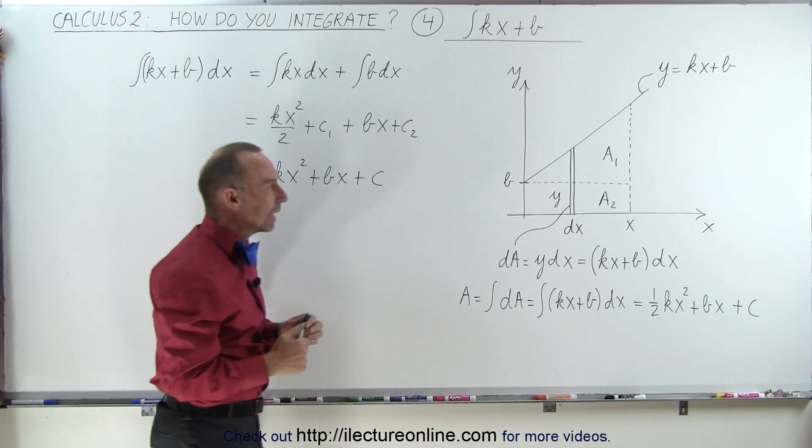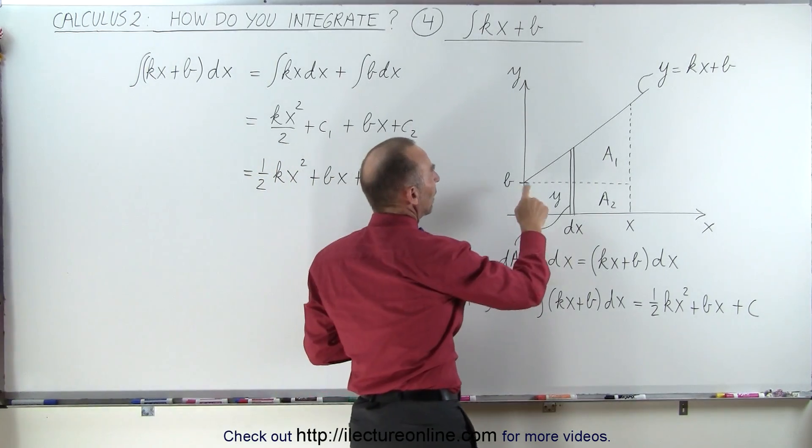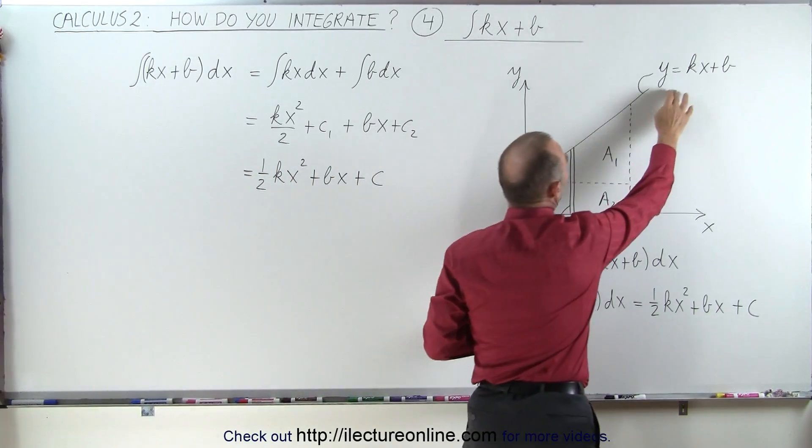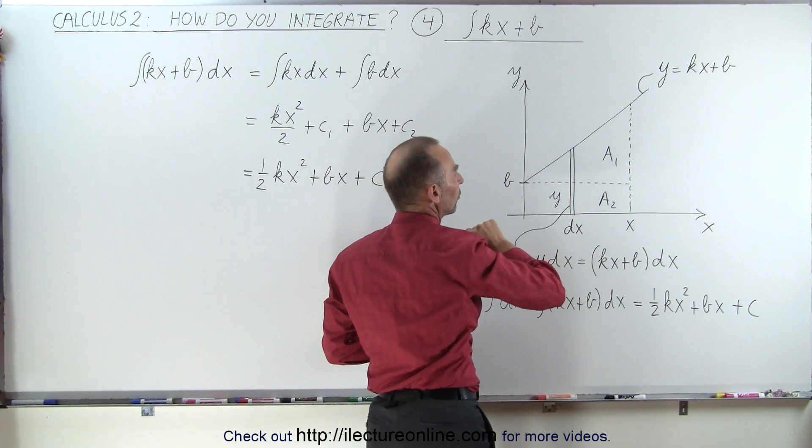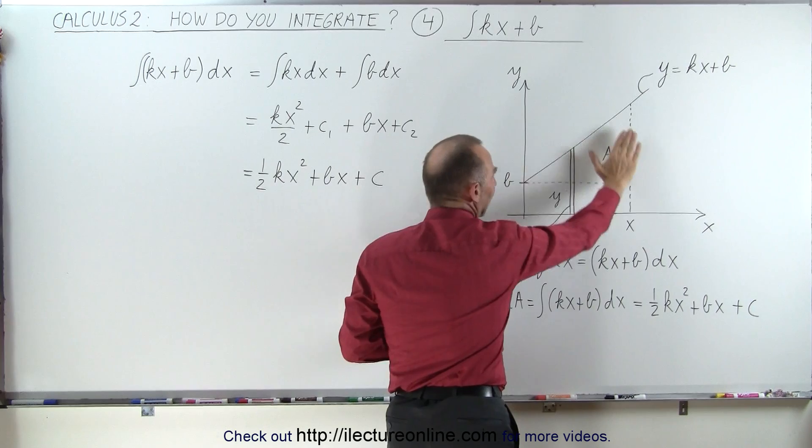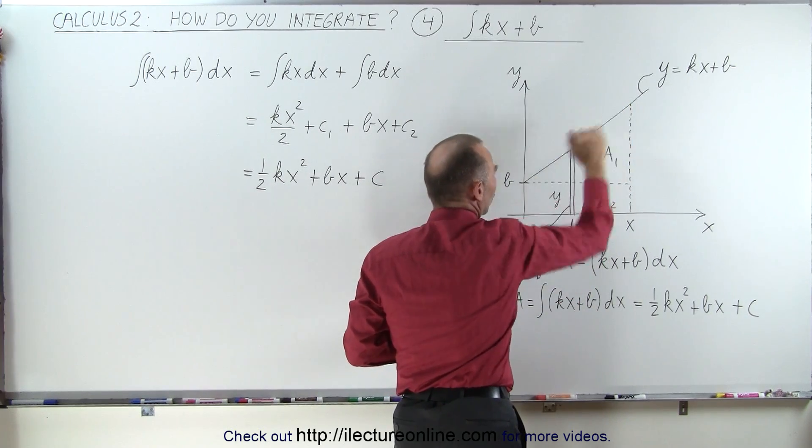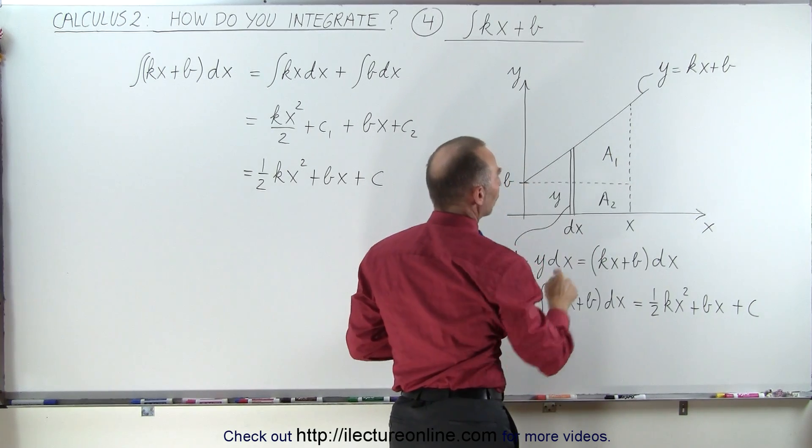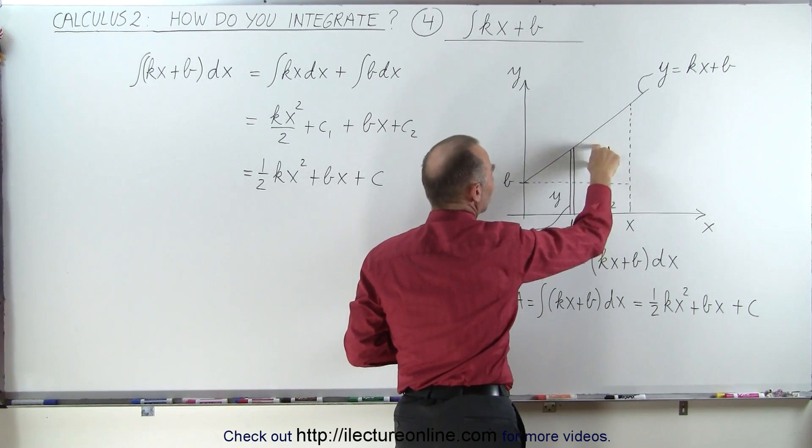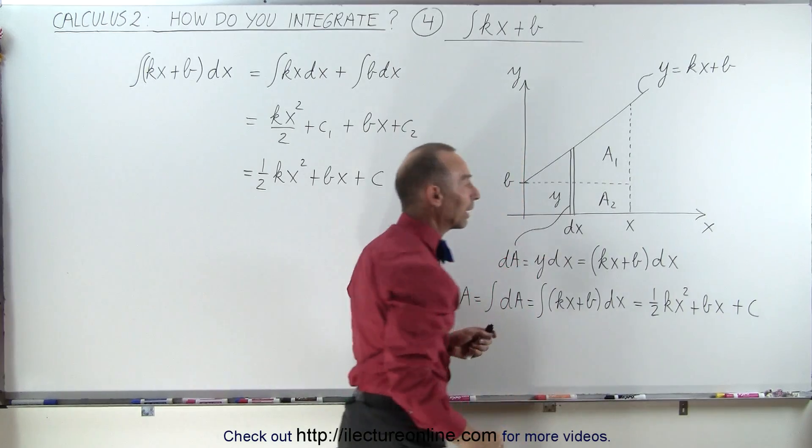Now let's take a look at it graphically. Here we have the equation y equals kx plus b, where b represents the y-intercept. If you take a look at the area underneath that curve, we can see that we can divide that into a triangle and a rectangle. Let's call a1 the area of the triangle and a2 the area of the rectangle.